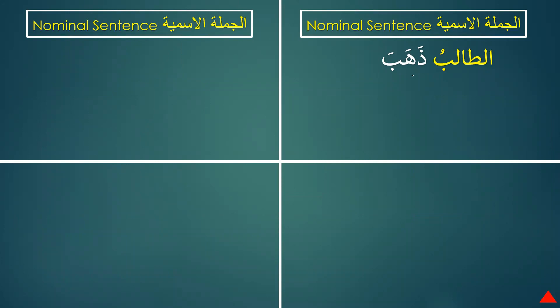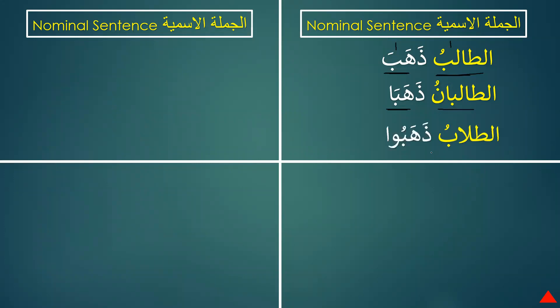In a nominal sentence the verb has to follow the noun — if the noun is singular the verb is singular, if the noun is dual the verb is dual, if plural then plural. So: al-talibani dhahabaa — the two students went, and al-tullabu dhahabu — the students went. The verb is following the noun in each case.